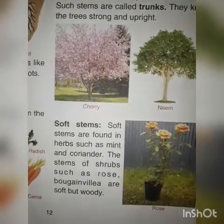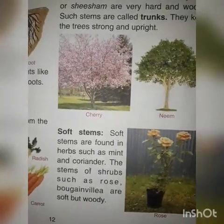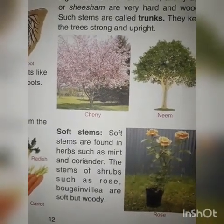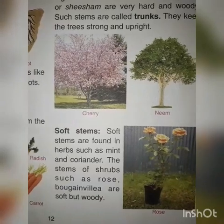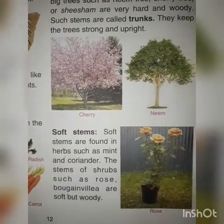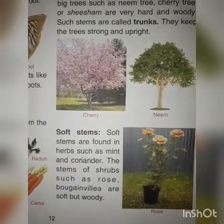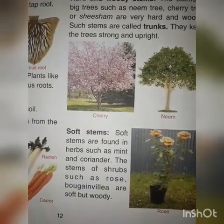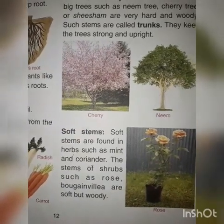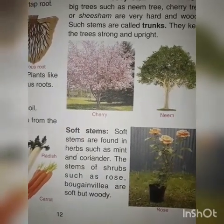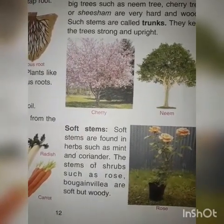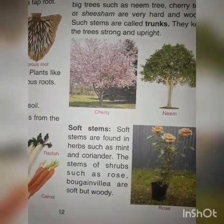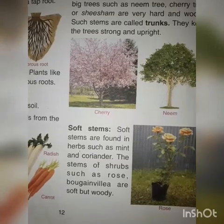Soft stems are found in herbs such as mint — mint means pudina — and coriander — coriander means dhania. The stems of herbs such as rose and bougainvillea are soft but woody.